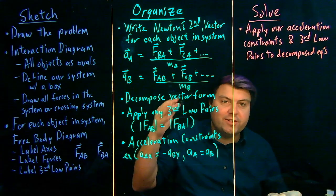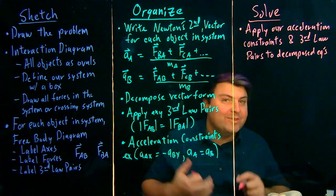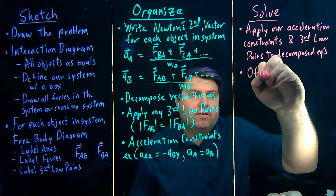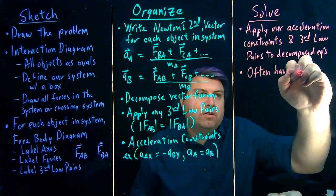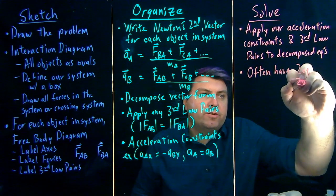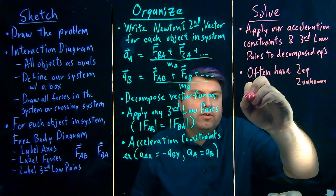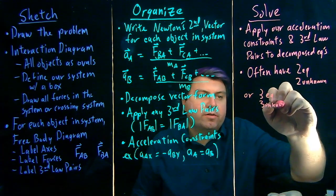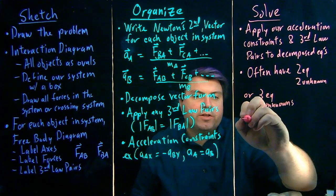What this will likely do is give us a number of equations, a number less than we used to have, but still quite a bit. So we'll often have two equations, two unknowns, or three equations, three unknowns, and we must solve.